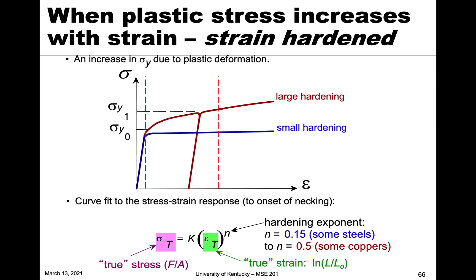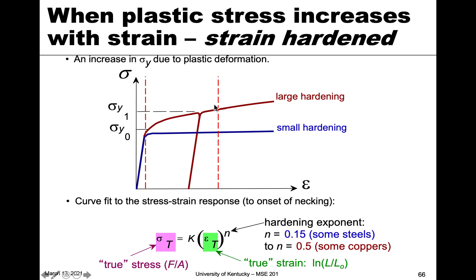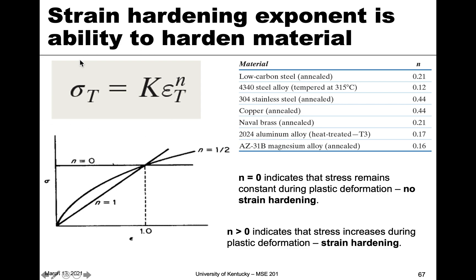Strain hardening — what's happening at the microstructural level — will be the theme of the next chapter. For now, note that if the slope in the plastic region increases, we're hardening the material. In true stress-true strain space, we can fit that slope using the equation: true stress equals K times true strain to the exponent n, where n is typically 0.15 for steels and 0.5 for copper. The parameter n controls the slope of this exponential function modeling the plastic region.